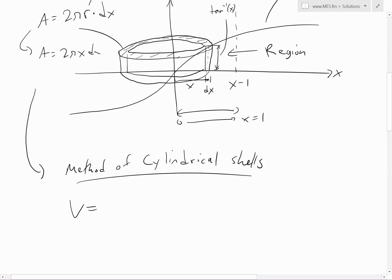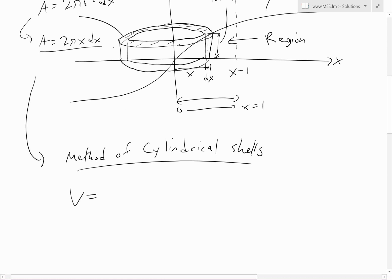Our area equals 2πx dx, and then the volume is area times height. We're going to sum up from 0 to 1, so the integral is 0 to 1 of 2πx tan⁻¹(x) dx.